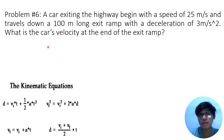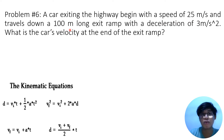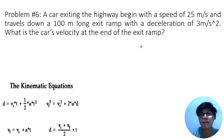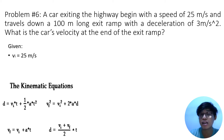Now let's proceed with problem number 6. A car exiting the highway begins with a speed of 25 meters per second and travels down a 100-meter long exit ramp with a deceleration of 3 meters per second squared. What is the car's velocity at the end of the exit ramp? We need to identify the three variables. We have initial velocity of 25 meters per second.